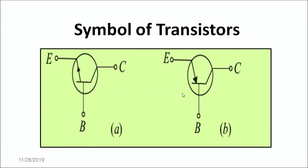These are the two distinct symbols of the transistor. The first one is the NPN transistor — this is the emitter, this is the base and this is the collector. This arrow indicates the conventional direction of the current flow. Conventionally, the base is made up of P-type and the arrow indicates from base towards the emitter in the NPN transistor. In the PNP transistor, the current is directed from the emitter to the base, because the emitter is P-type and the base is N-type. So the arrow simply indicates the conventional direction of the current flow.